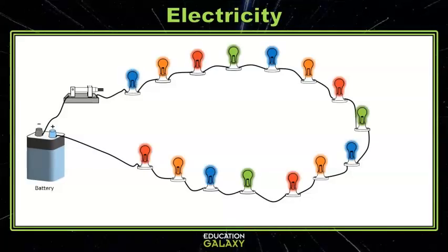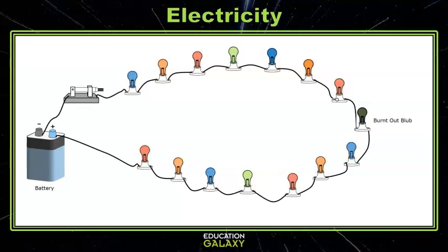This type of circuit is really easy to make, but it has one major downfall. If even one light bulb goes out, the circuit is disrupted, the circuit opens, and all of the light bulbs go out. Womp womp.